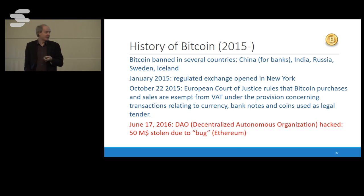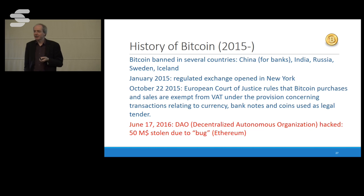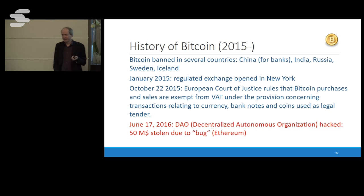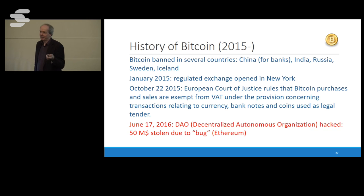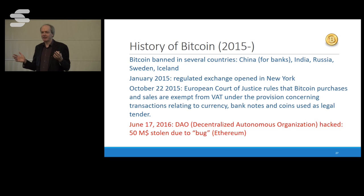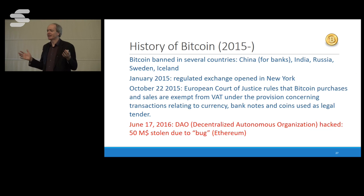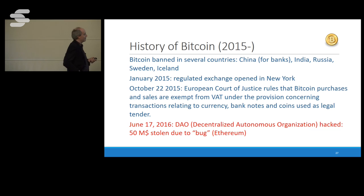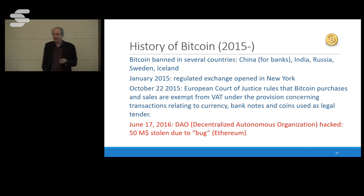There was the famous decentralized autonomous organization hack — this is Ethereum, not Bitcoin — where about 50 million dollars was stolen by a bug in a smart contract, something about recursive calls. The community was left with a choice: do a hard fork and break the rules saying 'we had code make the rules but we don't like the results,' or lose 50 million dollars. It's very dangerous: if you have smart contracts and make a code bug, you can become very poor.